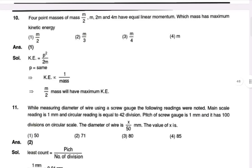The question is: 4 point masses of mass m/2, m, 2m, and 4m have equal linear momentum. Whose mass has maximum kinetic energy? The kinetic energy will be p squared by 2m, so kinetic energy is inversely proportional to mass. From m/2, there will be maximum kinetic energy.